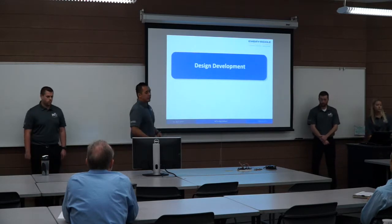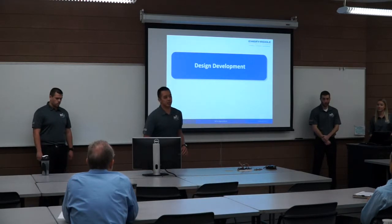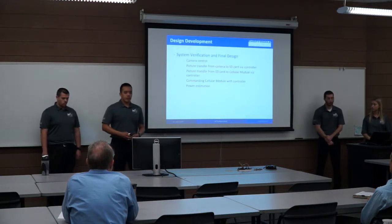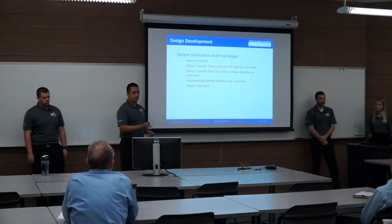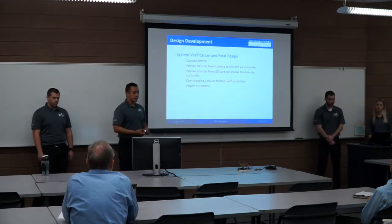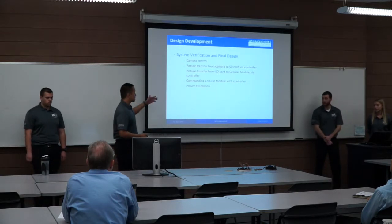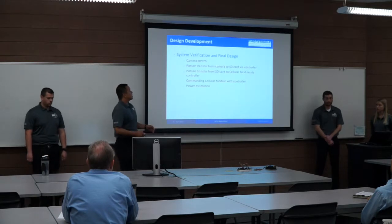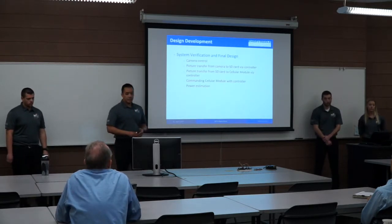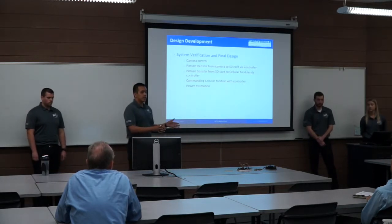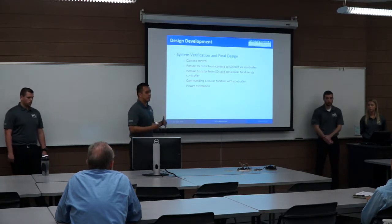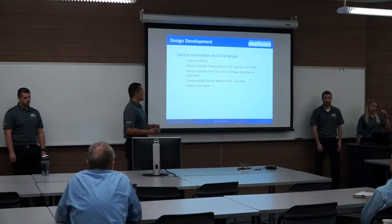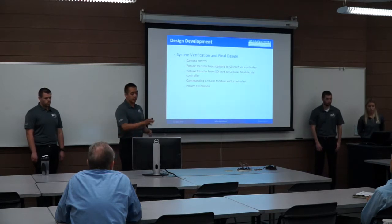Moving on to the design development — if you see all the wires, that's our mockup prototype along with two red boards. For design development we chose the Arduino Uno and two stackable shields, mainly because they consist of all the components we need for our final design. The tasks here are identifying everything we need to prove in order to ensure our design is feasible for our custom PCB. We need to verify we can control the camera, transfer the picture from the camera to the SD card via the controller, and then pull that stored image from the SD card into the cellular module to send to the user.